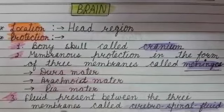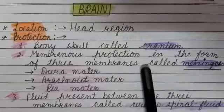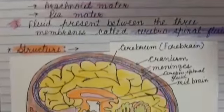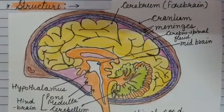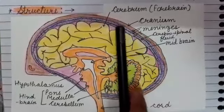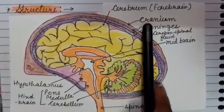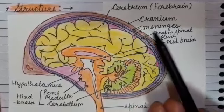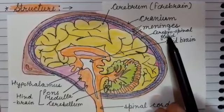These three things — Cranium, Meninges, and Cerebrospinal Fluid — collectively protect the brain from mechanical shocks. Here is the structure of the human brain. All parts are clearly located: the outer bony Cranium, the three Meninges membranes, and the Cerebrospinal Fluid in between them.